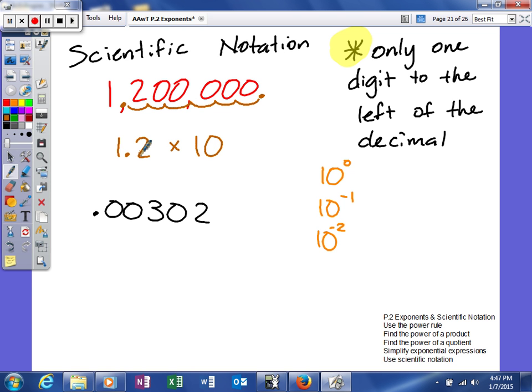Well, obviously 1.2 is smaller than this, so I need to make it larger. Anytime your answer is larger, you know your exponent is going to be a positive number. So, therefore, it's going to be 10 to the positive 6th power.